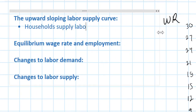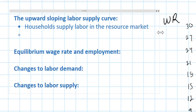Households supply labor in the resource market. This lesson is part of a series of lessons on resource or factor markets. As you know, factors of production — land, labor, and capital — are supplied by households to firms in resource markets. So what would lead households to be willing and able to supply more of their limited labor to a particular industry?